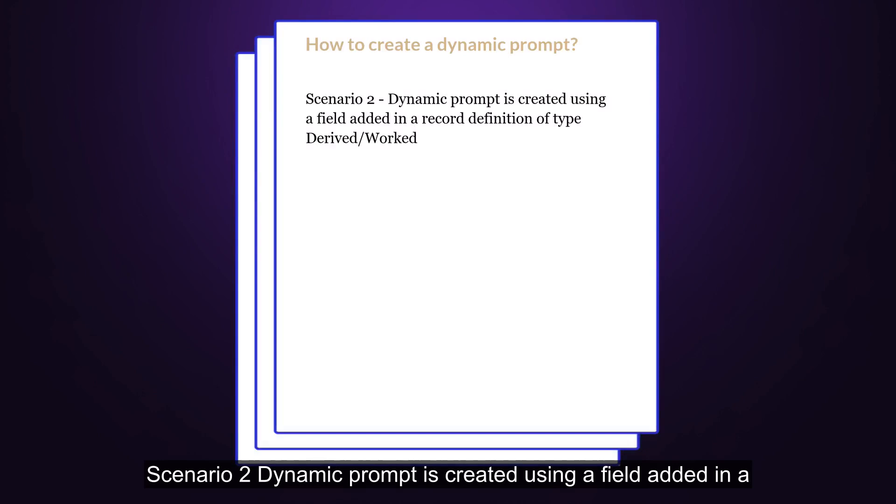Scenario 2: Dynamic prompt is created using a field added in a Derived/Worked record. The field name is used as the bind variable, which is mentioned in the record field properties. Then in the PeopleCode, record definitions are assigned to this bind variable based on a certain condition which becomes the prompt record. Here, the structure of the displayed prompt appears different each time because the underlying prompt record is changed.